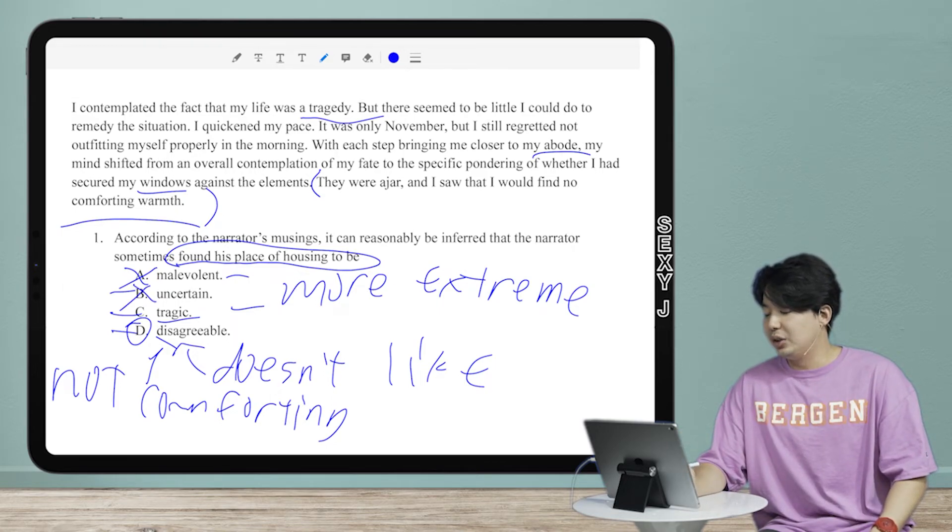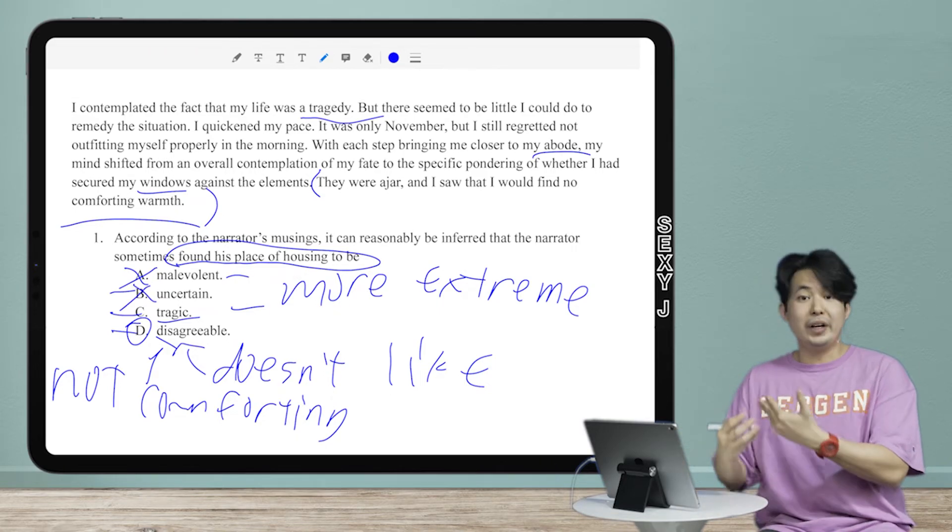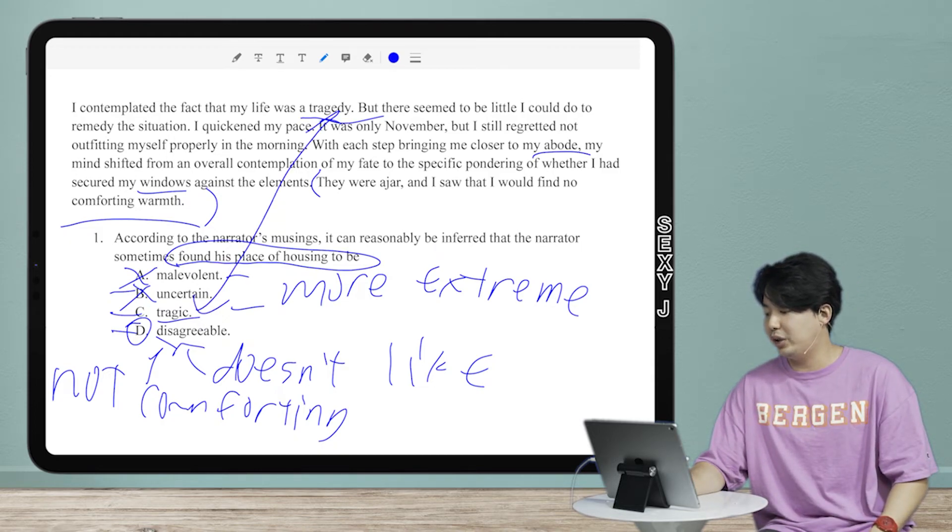And B, uncertain. That's just a very good trap answer because it's vague. And let's get C again, tragic. Why do they put it there? Because it says his life is a tragedy.